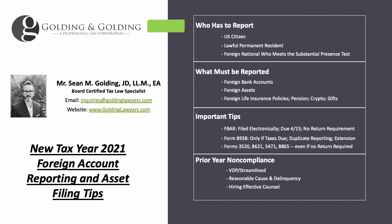First, who has to report? It's U.S. persons. U.S. persons doesn't only mean individuals — that's what we specialize in here — but it could also mean domestic companies and things of that nature. Person doesn't mean individual. So a U.S. citizen, lawful permanent resident, foreign national who meets a substantial presence. If a U.S. citizen, no matter where they live, they're stuck with it.